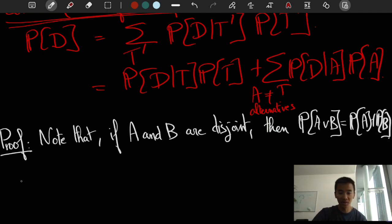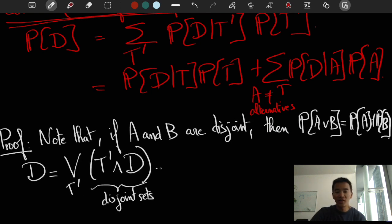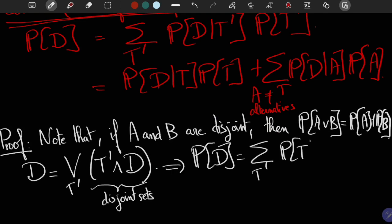So, it's very commonly accepted in probability theory, which is one of the basic axioms. Now, given that theories are disjoint, we can write D as the disjoint union of the sets D intersection with T prime. And thus, we have the probability of D. We know that this is equal to the sum over T primes of the probability of D and T prime.